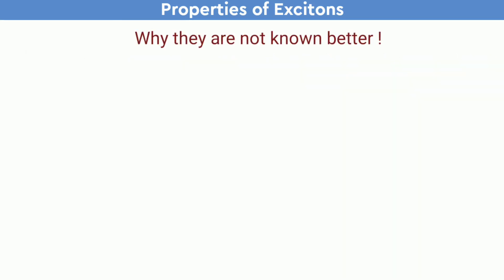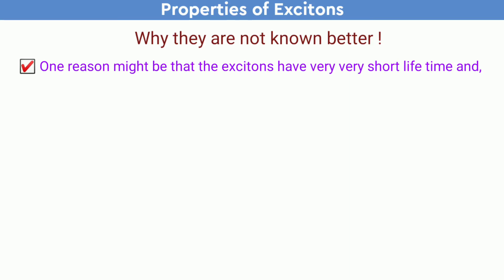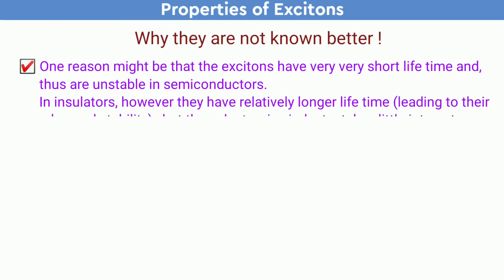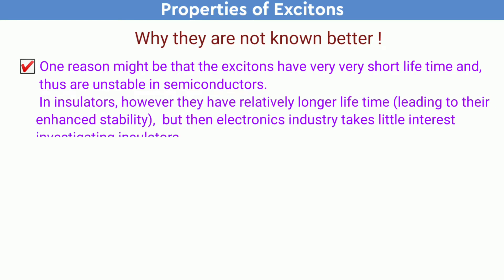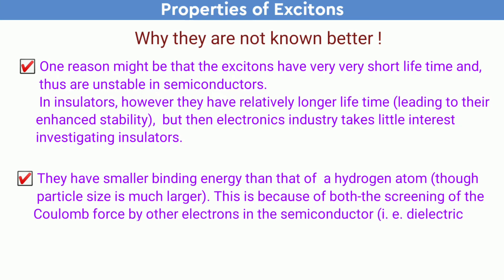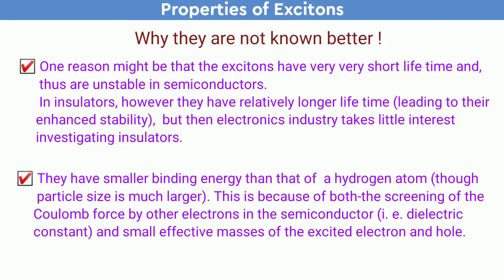A question arises: why are excitons not better known? One reason might be that they have a very short lifetime and an unstable nature in semiconductors. In insulators, however, they have a relatively longer lifetime, but the electronics industry takes little interest in investigating insulators. They have smaller binding energy than a hydrogen atom, though the particle size is much larger.